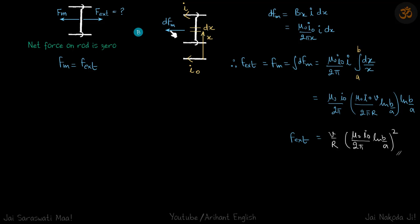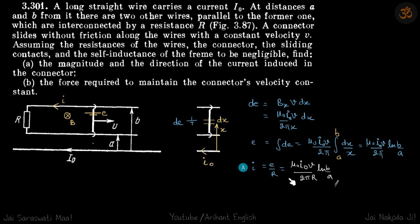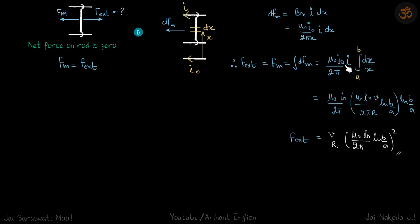small force DFM will be BX times I times DX. BX is again μ₀I by 2πX. The value of I we can put from here, which we just found, which is a constant, and DX by X with limits